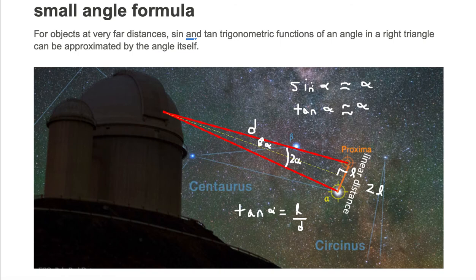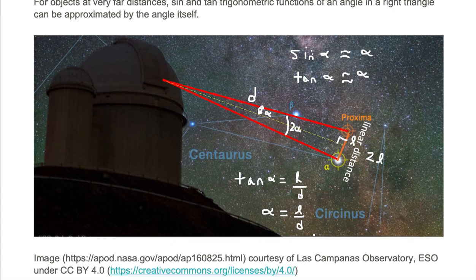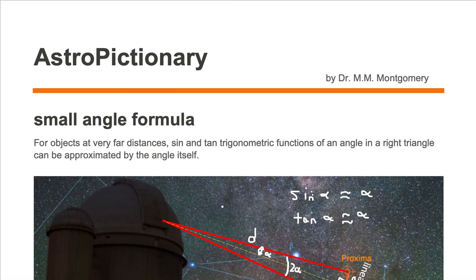Now the small angle formula says that we can replace tangent of alpha with alpha. So alpha will then equal the linear distance divided by the physical distance from the observatory to the two stars. And this is one example of what we mean by the small angle formula.